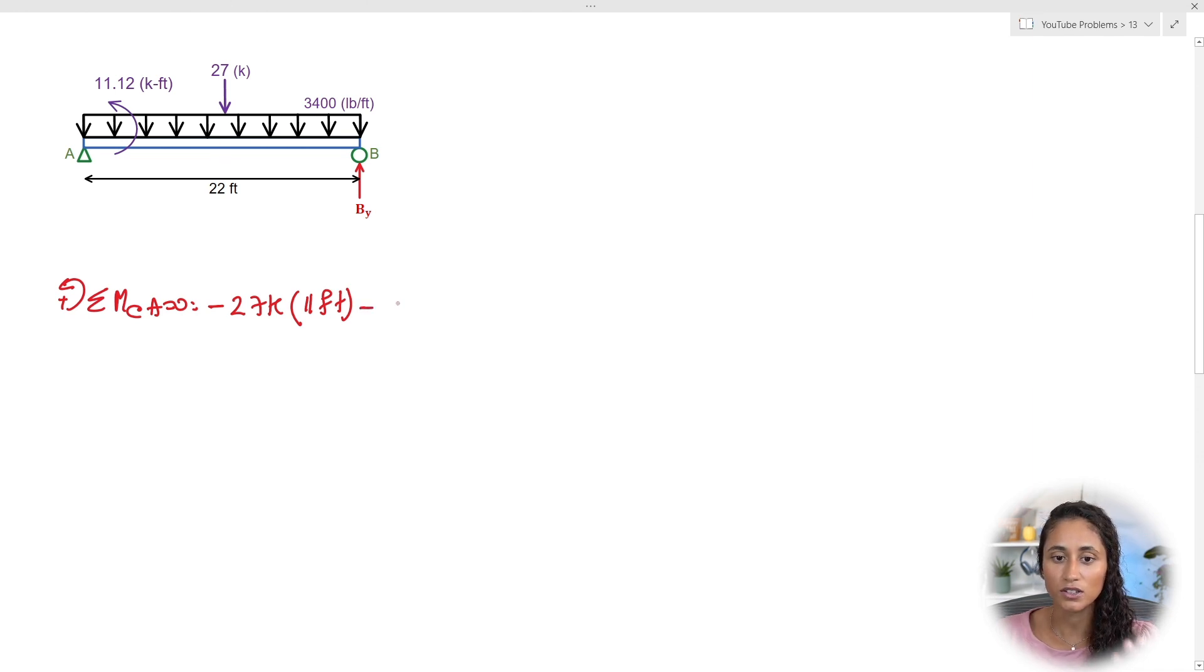Then we're going to have minus the distributed load. It's minus because it's going opposite of the moment and then we're going to have 3,400 pounds per foot. Now note here that this force is in kips, the moment is in kips, and we also want By in kips. But the distributed load was given in pounds.